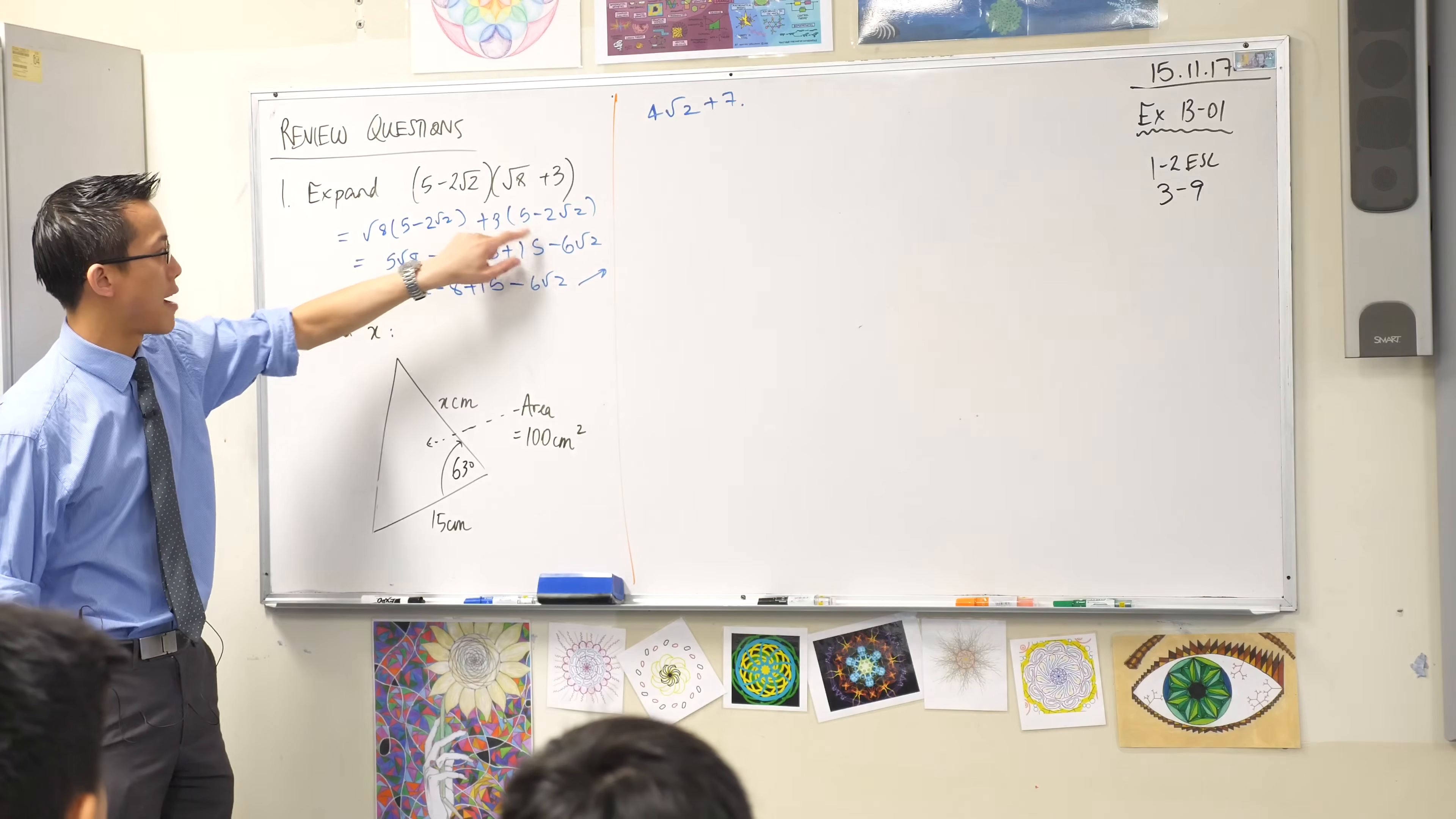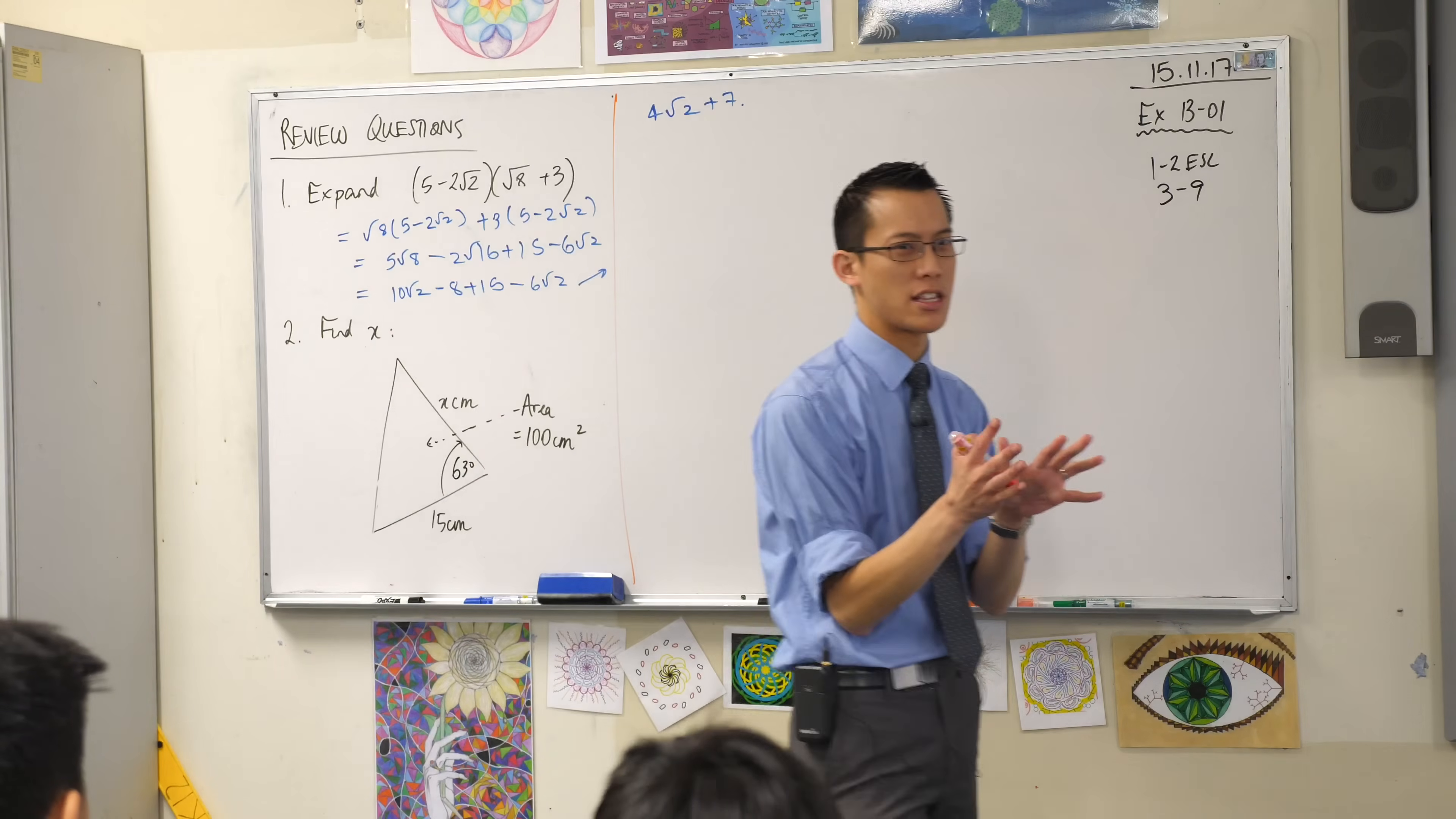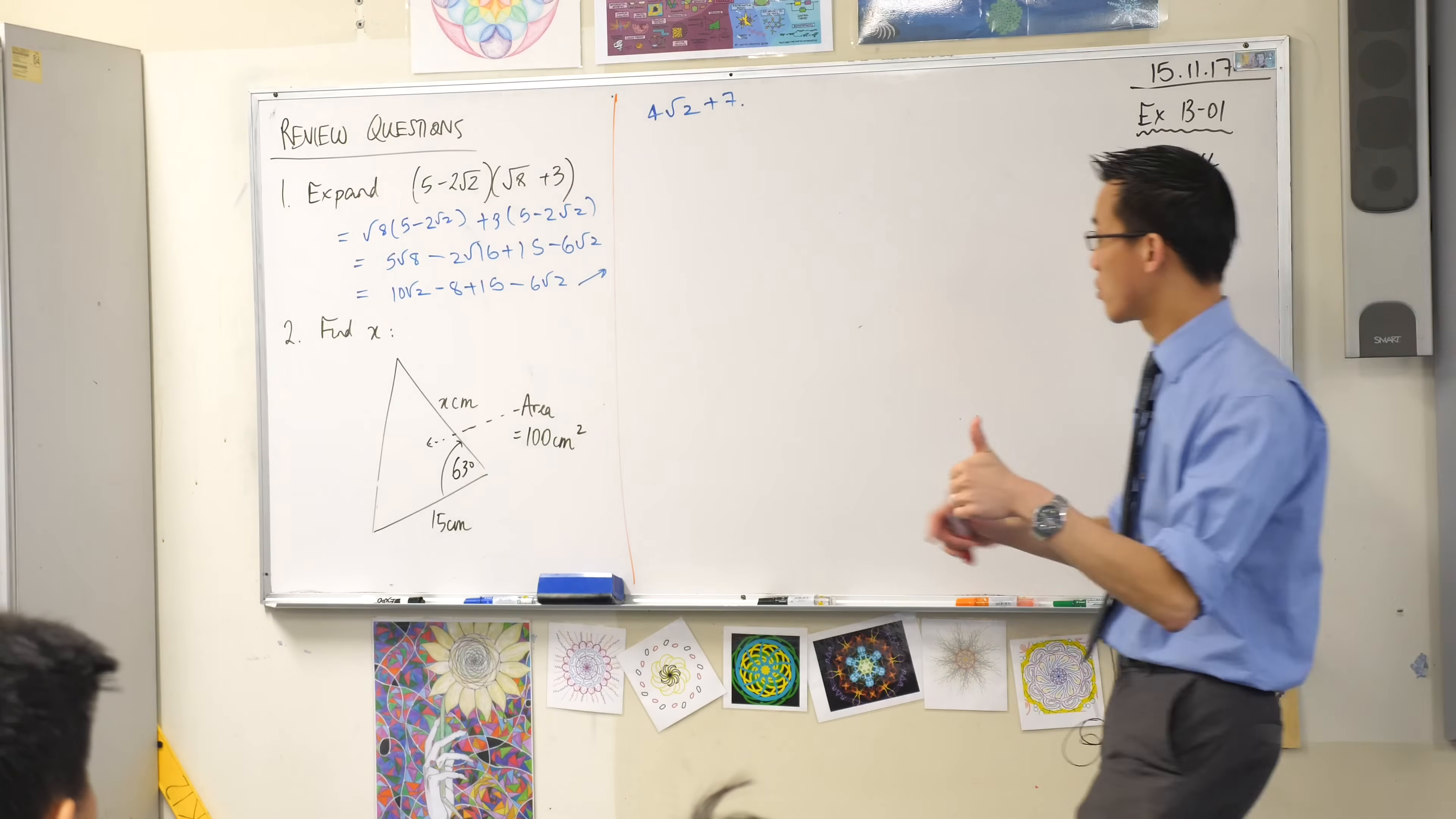15 and minus 6 root 2, there are some negative signs flying around there, do they all look like they're in the right spots? Are we happy with the negative signs because that's a really easy spot to mess up? I'm happy? Good.